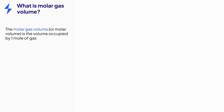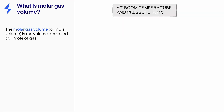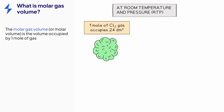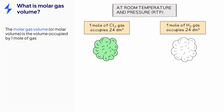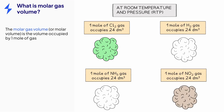The volume occupied by one mole of gas is known as the molar gas volume, or just molar volume. At room temperature and pressure, commonly known as RTP, it is found that one mole of any gas will occupy 24 decimetres cubed.